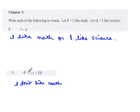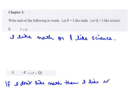When you hit the conditional symbol, that's where you put 'then', which means I need the 'if' at the beginning. If I don't like math, then — well, what? Here's the clause. So we'll put P again, which is 'I like math'. And this symbol is the conjunction symbol, which is 'and' or 'but' — I'll use 'and'. And then Q: 'I like science'.